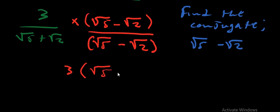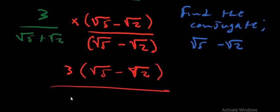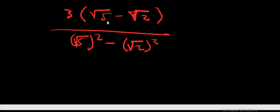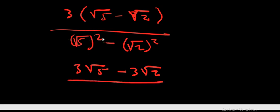So we are simply having 3 times open brackets square root 5 minus square root 2, over the difference of two squares: square root 5 squared minus square root 2 squared. After doing that, we multiply what is on top by 3, giving us 3 square root 5 minus 3 square root 2, over square root 5 squared which is 5, minus square root 2 squared which is 2.